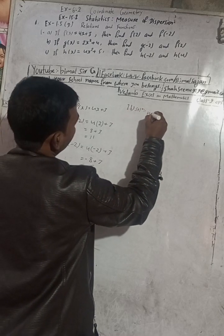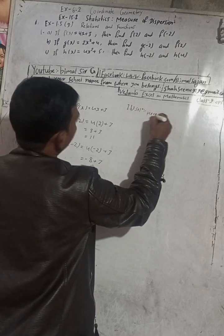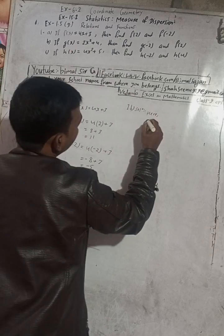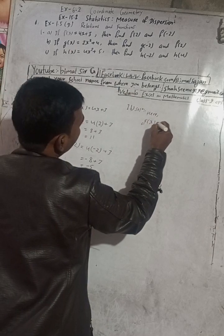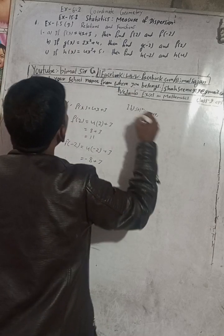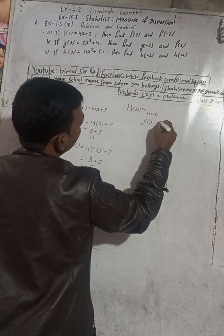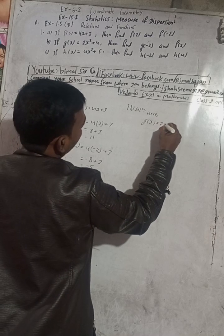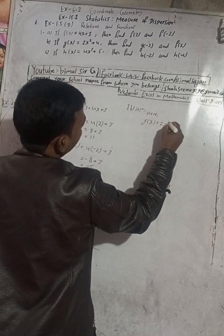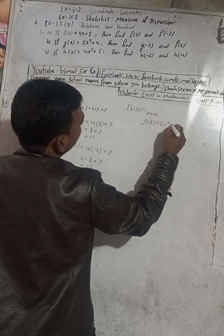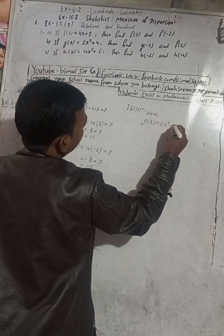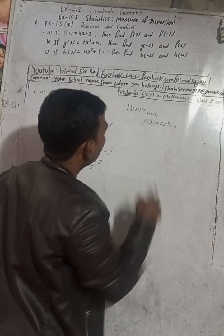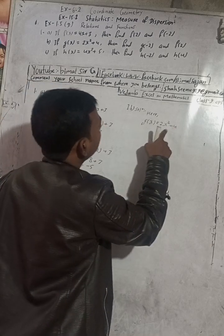Now for part B. Here G(x) is equal to 2x squared plus 4. Now G(x) is equal to 2x² + 4.